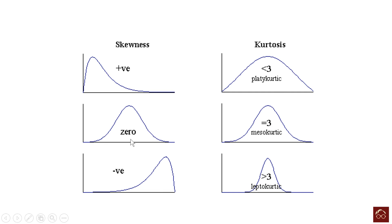When we have normally distributed data, we will have a skewness of zero and a kurtosis of three — that's the ideal. There are equations to calculate these values, and descriptive statistics in any statistical package will give you the skewness and kurtosis values. In practical situations, a skewness value between plus one and minus one is good enough, and a kurtosis value of three or close to three is fine. When kurtosis is less than three, the distribution is broader; when greater than three, it is narrower and more peaked.